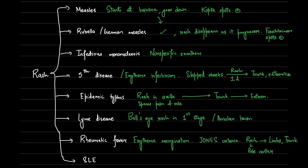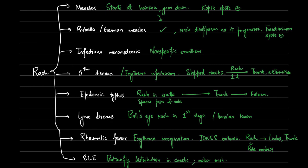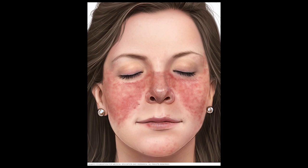Rheumatic fever has a rash called erythema marginatum, which is also a part of Jones criteria used for diagnosis. The rash spreads on the limbs and the trunk and is raised with a pale centre, as you can see here. SLE has a classical rash in butterfly distribution on the cheeks, also described as a malar rash. This one is very popular.